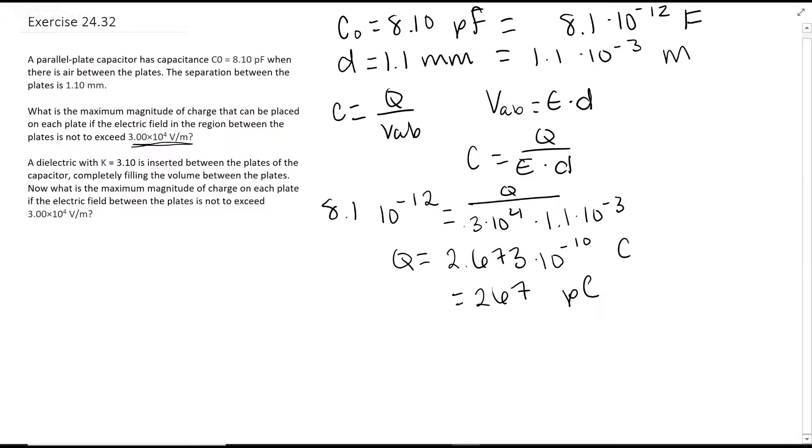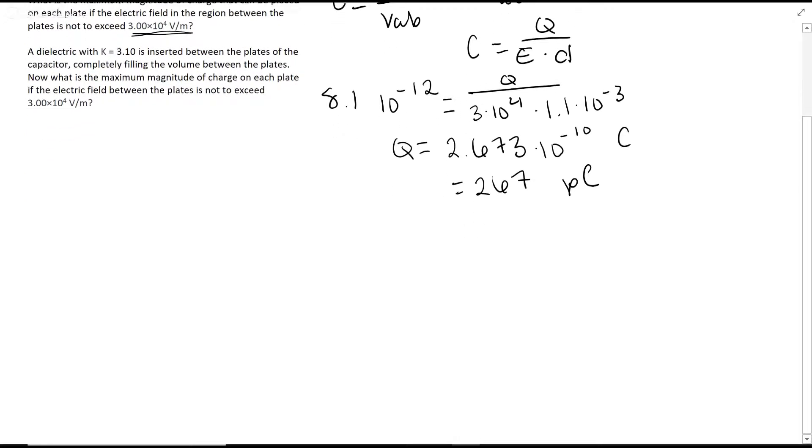So in the second part, they introduce the dielectric K. So we're going to need a new equation. So we have C equals KC0, which we have a C0, and we have a K.